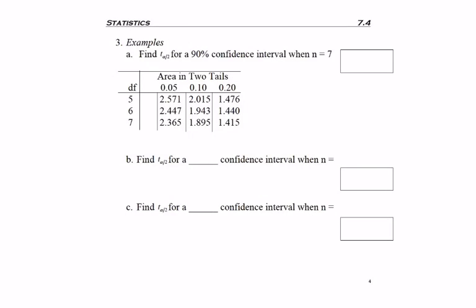So now let's do a couple examples of actually finding critical values for confidence intervals using the t-table. I just took a little snippet of the t-table here.